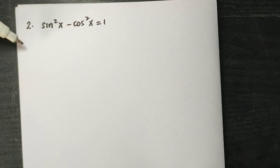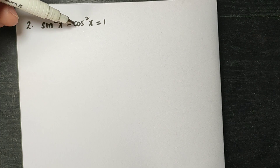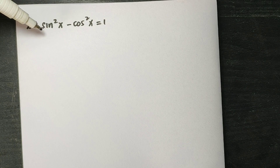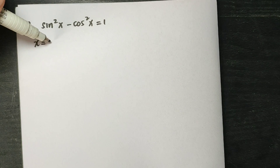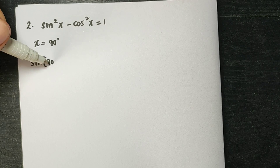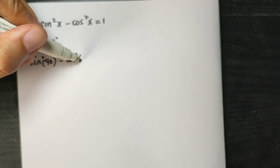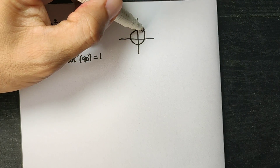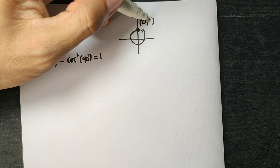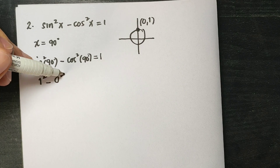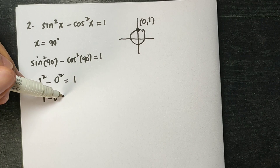Another example: identify if this is an identity or a conditional equation. We have sine squared x minus cosine squared x equals 1. We will try the value x equals 90 degrees. Using our unit circle, 90 degrees has coordinates 0 and 1. So sine squared of 90 is 1 squared, cosine squared of 90 is 0 squared, giving 1 minus 0 equals 1. Yes, they are equal.